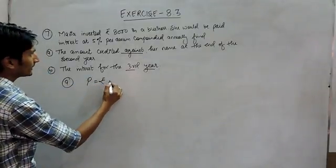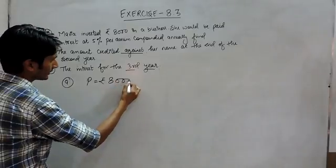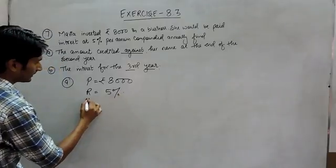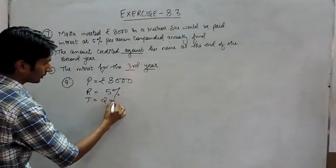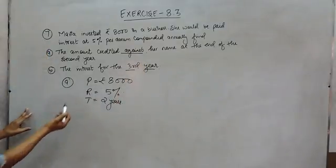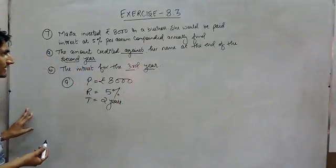Here the principal is 8000, rate is 5% and time is 2 years. Because you have to find the amount which she will be credited at the end of the second year.